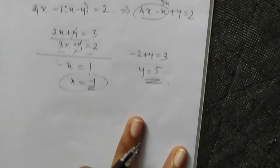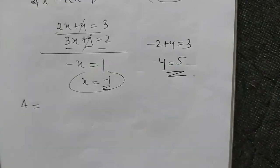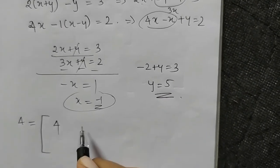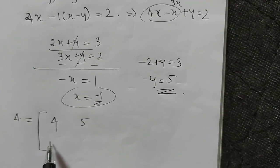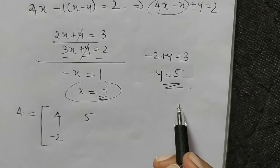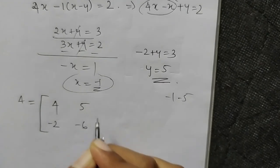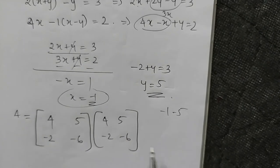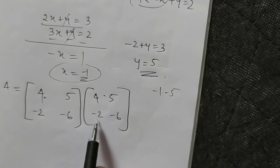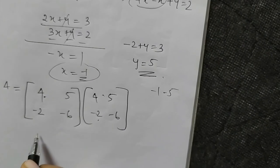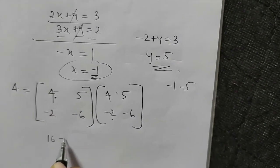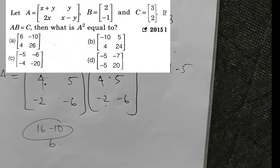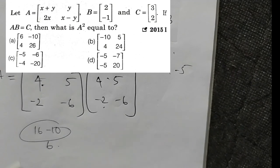Now we compute A squared using x equals minus 1 and y equals 5. Multiplying: 4 times 4 equals 16, minus 10 equals 6. The first element is 6, so option A is the right answer.